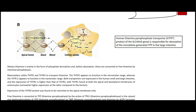We have THTR1 and THTR2 in the apical membrane facing the intestinal lumen, and then THTR1 in the basal membrane. These are symporters with H+ — so in both directions, thiamine is moved through these transporters using a proton gradient.